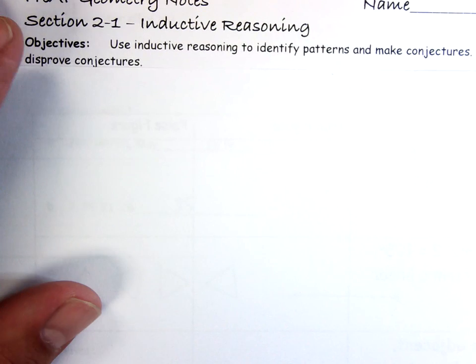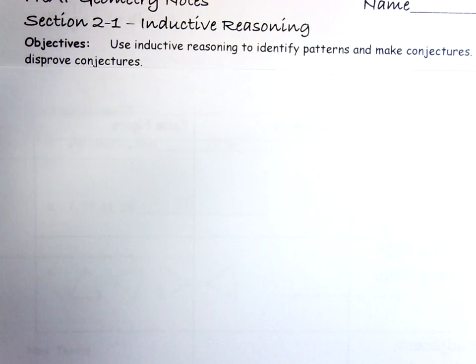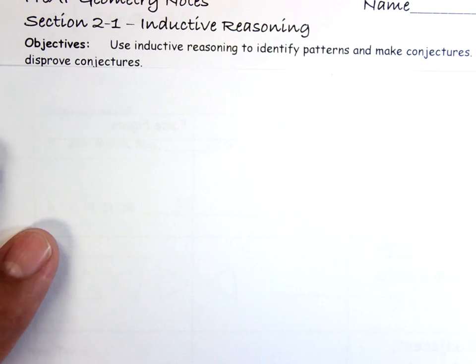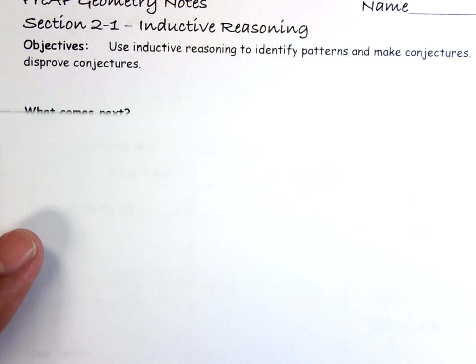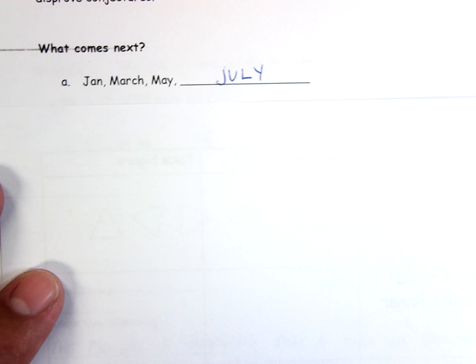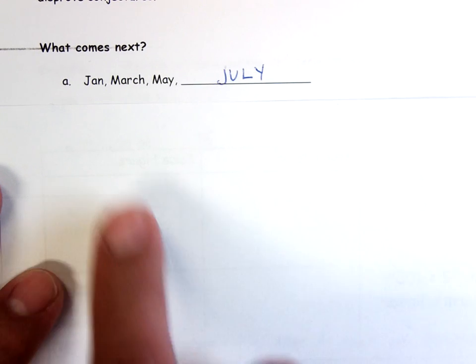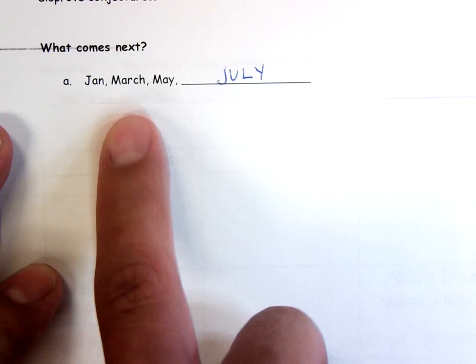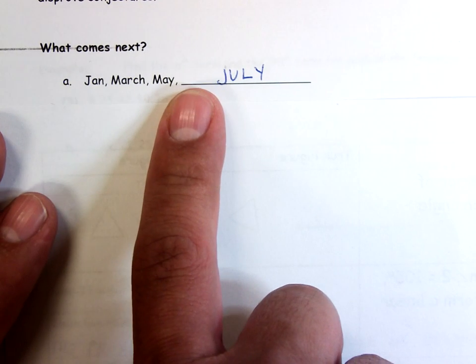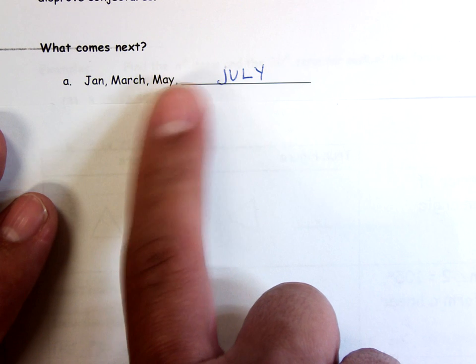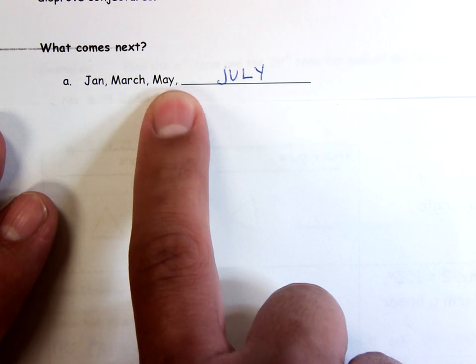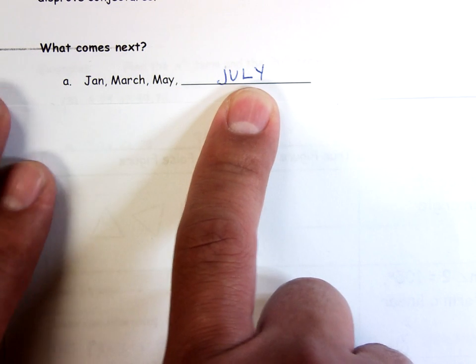As we're changing topics, we're talking about inductive reasoning — how do we prove or show that stuff is true or not true? This one gave us some months in a row and asks what comes next: January, March, May. It looks like it's skipping a month every time, so we skip June and then go to July.